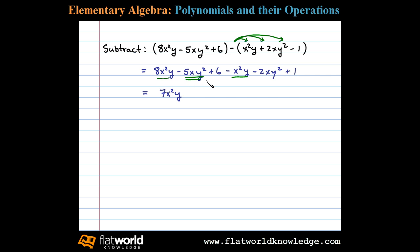Negative 5xy squared and negative 2xy squared are like terms. Negative 5 minus 2 is negative 7xy squared. And then 6 plus 1 is plus 7.